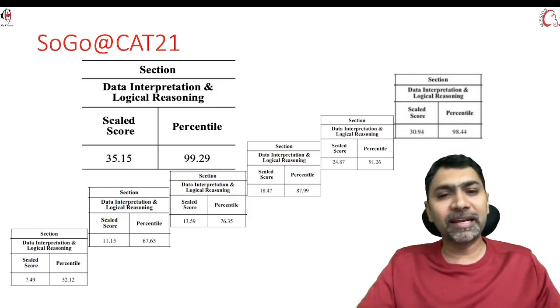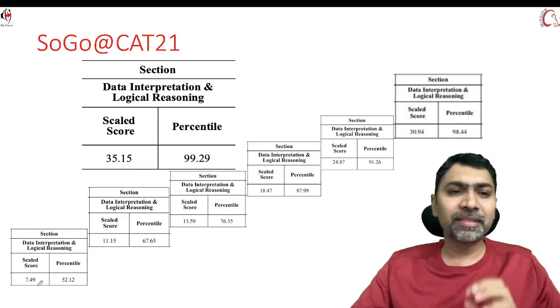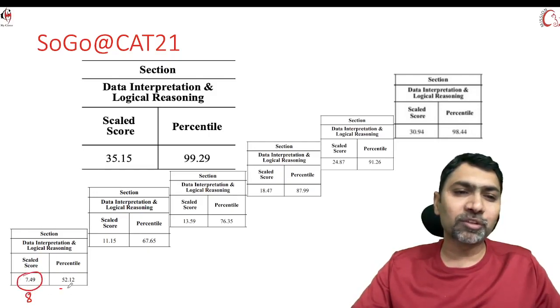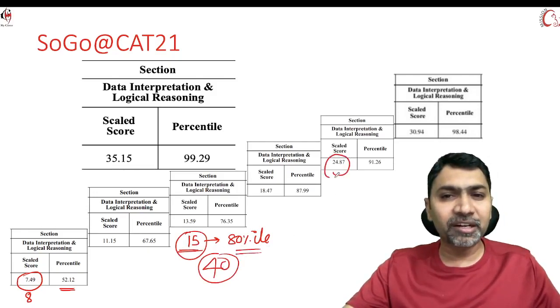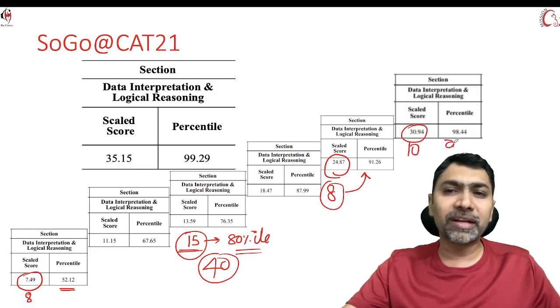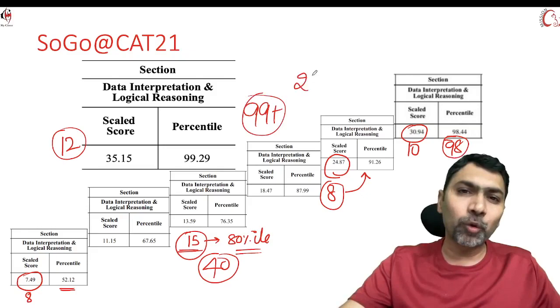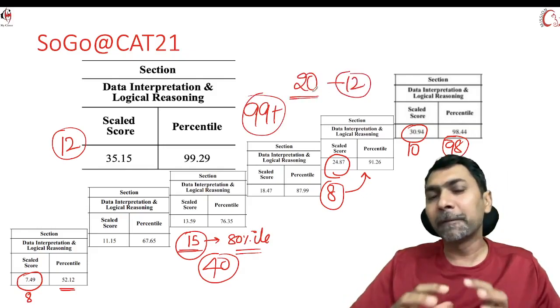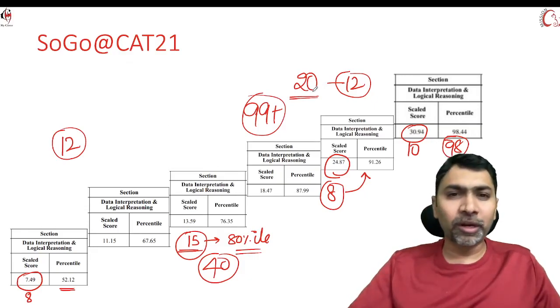In this video I shall be sharing how you can get 99 percentile in DILR and what is my secret. Let us understand this relationship: a very low score, just 8 score, is giving you somewhere around 52 percentile, and somewhere around 15 score is giving you somewhere around 80 percentile. Just attempting five questions right in 40 minutes is giving you 80 percentile. The moment you touch eight questions, you're getting 91 percentile, ten questions around 98 percentile, and if you're managing 12 questions right, you'll be getting 99 percentile. So out of 20 questions, 12 would be your target to reach 99 percentile.